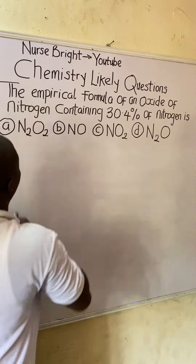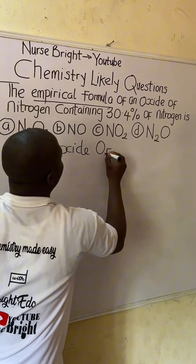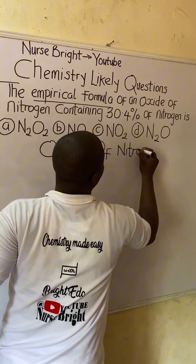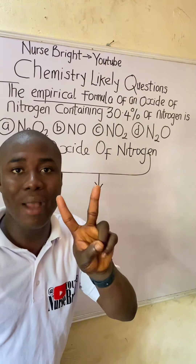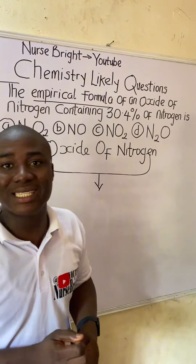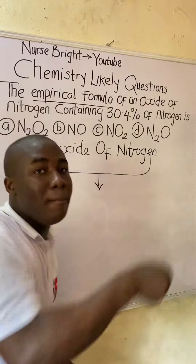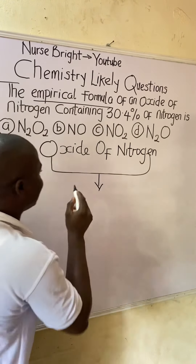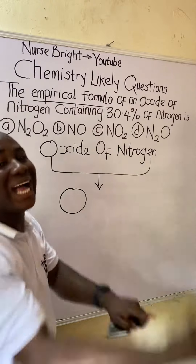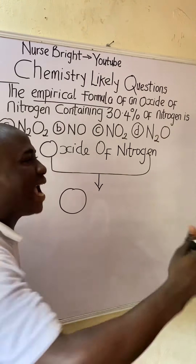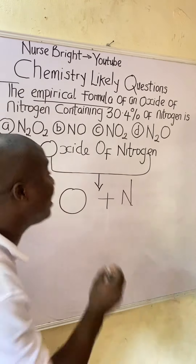What they are asking us is to determine the empirical formula of an oxide of nitrogen. Whenever we hear the word 'oxide,' it means the compound contains two elements. The dominant element is oxygen, and the other element is specified — here it is nitrogen. So this particular oxide is made up of oxygen and nitrogen.